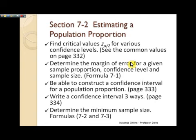And then on page 333, that lays the groundwork for constructing a confidence interval for a population proportion p. So make sure you look over that. That's a four step procedure that's easy to follow. And then on page 334, you'll see that we want to be able to write a confidence interval three different ways.